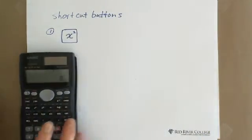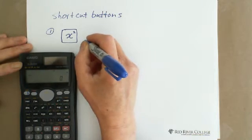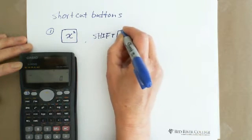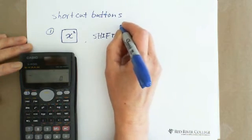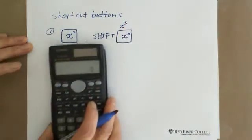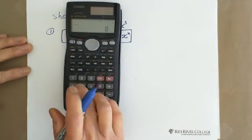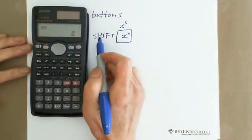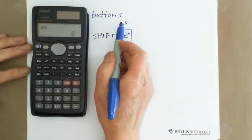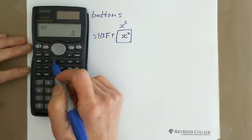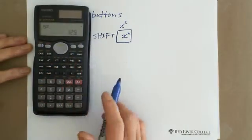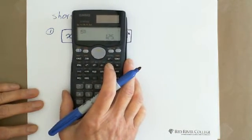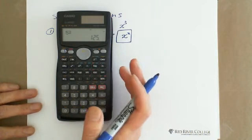Also, the top label on that button shows X³ (X cube), accessed via SHIFT + X². So if you want to do 5 cubed, you press 5, then SHIFT, and this gives you X cube. When you hit SHIFT, you're working with the top brown-labeled function. So 5 cubed equals 125.